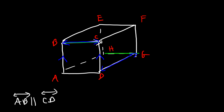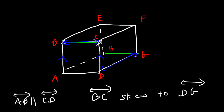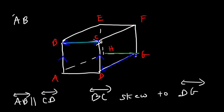BC and DG are skew lines — we can't draw a plane that contains both of them, so BC is skew to DG. Because they are non-coplanar lines, they will never intersect. Also, AB and BC are perpendicular — they do intersect, but at right angles.